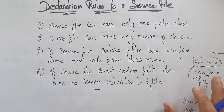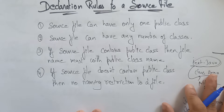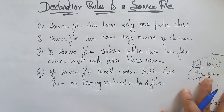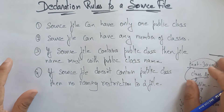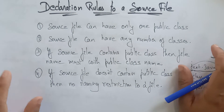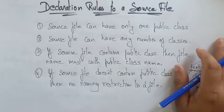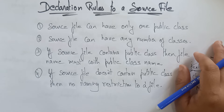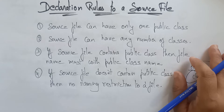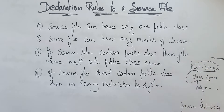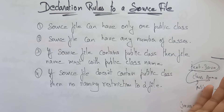Welcome back students. In this video I want to explain some declaration rules for a source file. Every student is getting some doubts — programs not compiling or not running because of some silly mistakes while declaring or while saving the files. Sometimes we use different names when we need to use the same name as the class name.